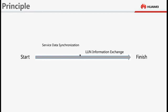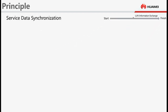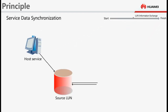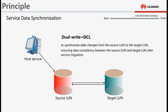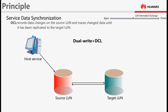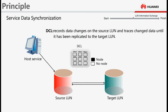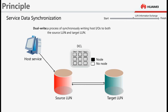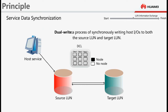During Service Data Synchronization, while services are running, Smart Migration uses the dual-write mechanism and the data change log (DCL) to synchronize data changes from the source LUN to the target LUN, ensuring data consistency after service migration. The DCL records data changes in the source LUN and traces changed data until it has been replicated to the target LUN. Dual-write is a process of synchronously writing host IOs to both the source LUN and target LUN.